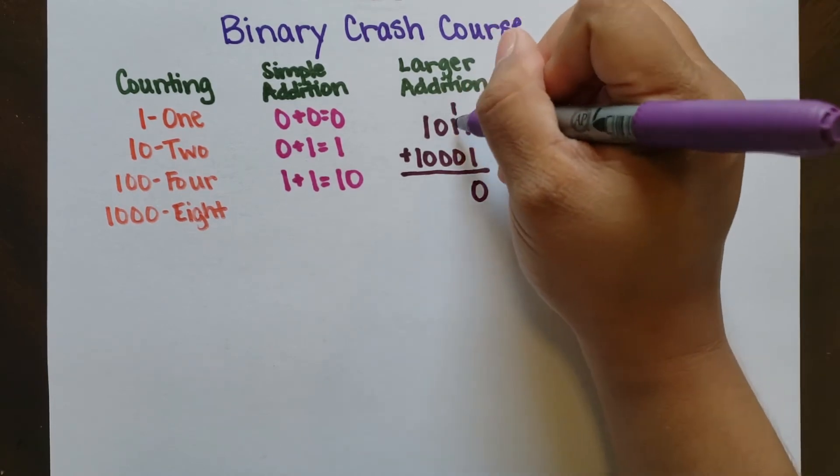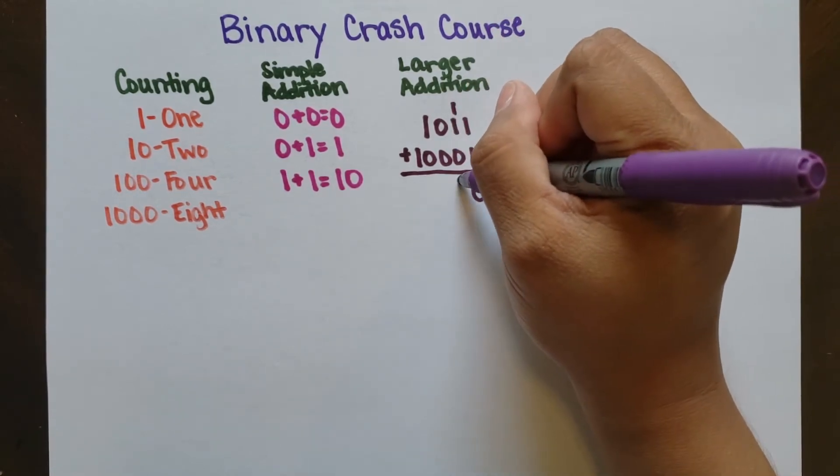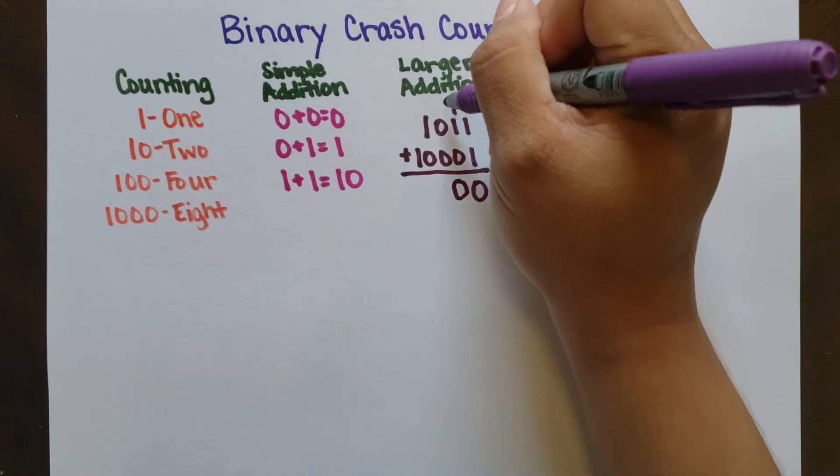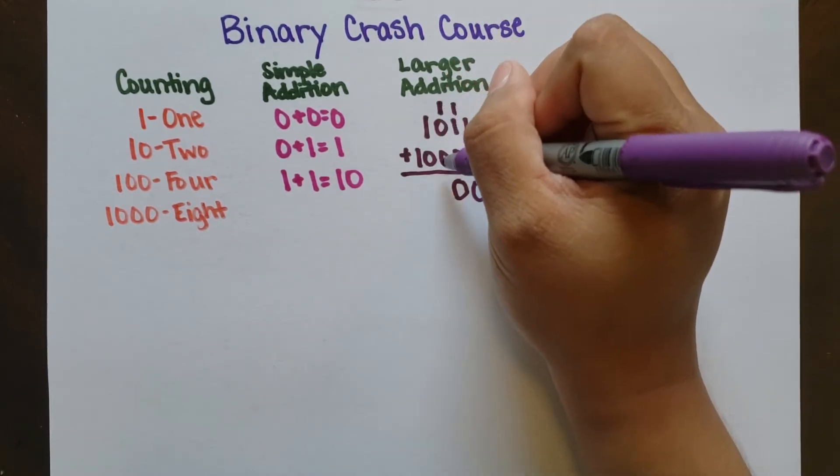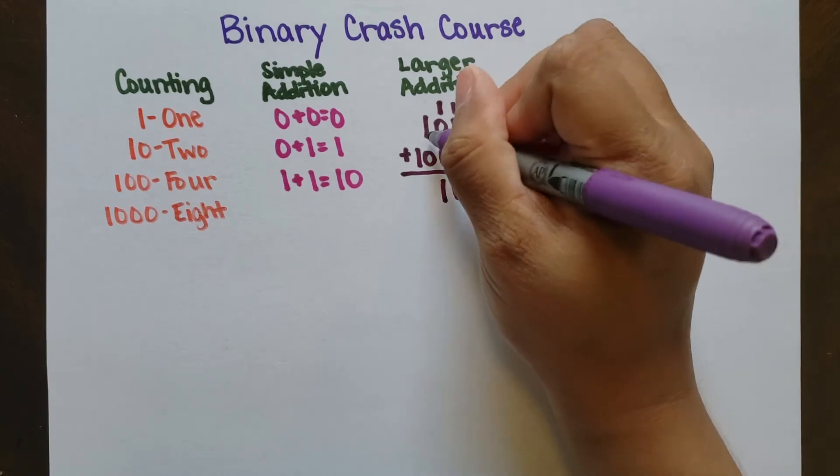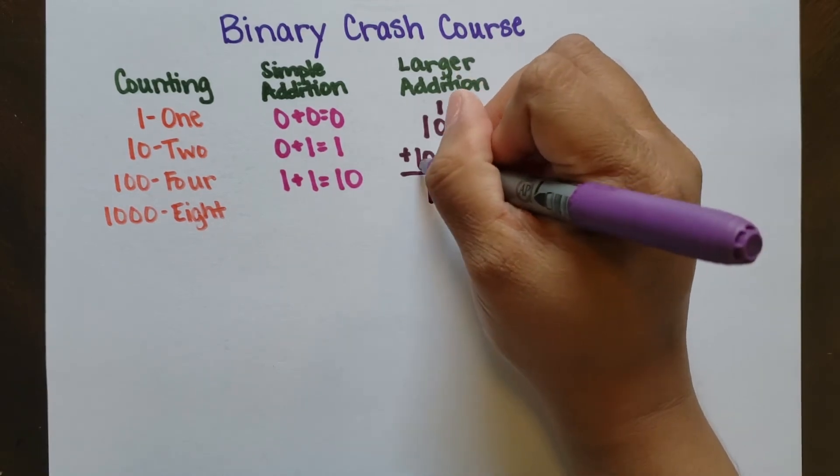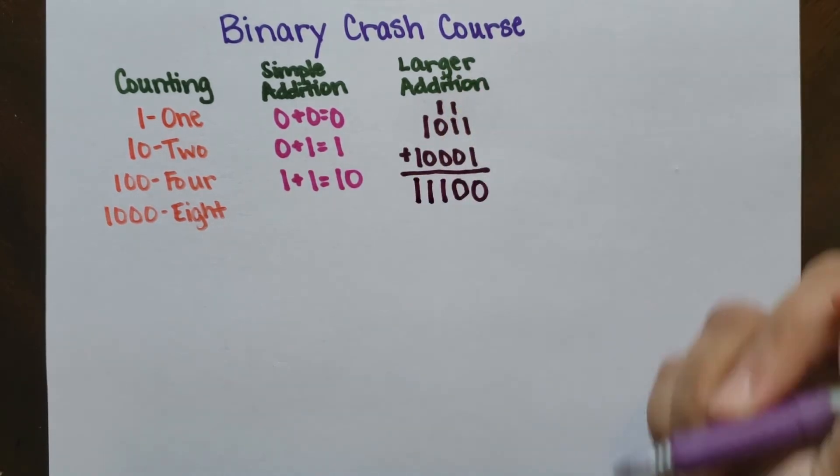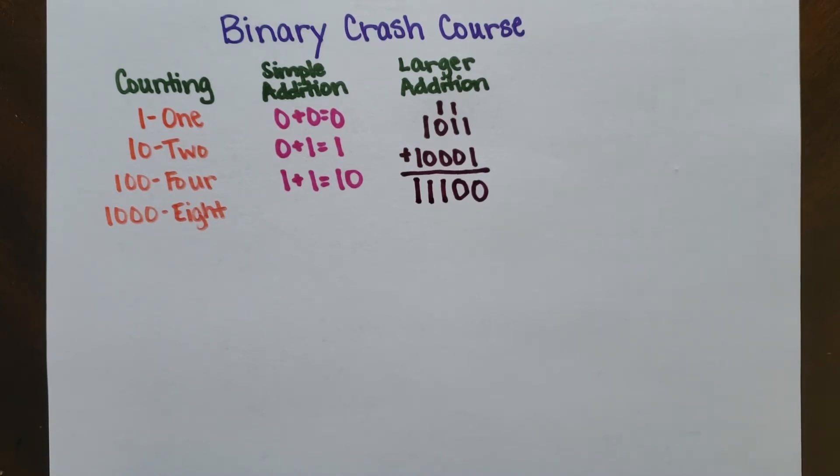Then again, we have 1 plus 1. 1 plus 1 is 10, so we bring down the 0 and carry the 1 to the top. Now we have 1 plus 0 plus 0, which is just 1, and 1 plus 0, which is just 1, and then just 1 by itself. So in the end, when we add these two numbers together, we get 11100, or 28.